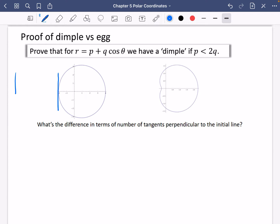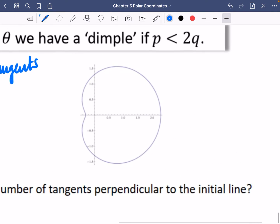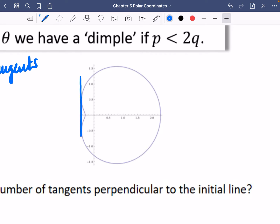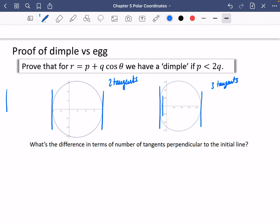Well, for the egg, you're going to have one here and you're going to have one here. So there are two tangents. But for the one with the dimple, you're going to have a tangent that's bouncing off those two bits, a second one here and a third one. So for the dimple, there are three tangents and we're going to investigate what happens for these vertical lines.